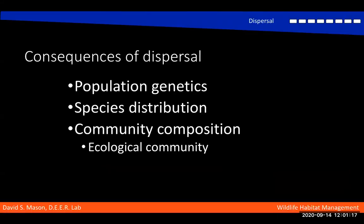Dispersal has a lot of consequences for ecological communities. The most important is that it partially determines what is inside the community — what organisms are there. That is the framework upon which all other ecological interactions are built. So it's one of the most important processes.